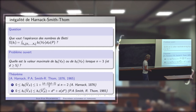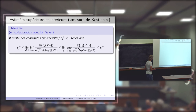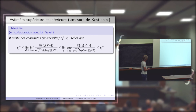Qu'est-ce qu'on a obtenu comme résultat avec Damien ? Voici essentiellement le théorème. Il existe des constantes universelles c_i^− et c_i^+ telles que vous avez un encadrement. Cela signifie que l'espérance mathématique des nombres de Betti, par exemple le nombre de composantes connexes ou le nombre de trous à trois variables, a une croissance en √d^n — un peu comme dans le théorème de Kostlan.